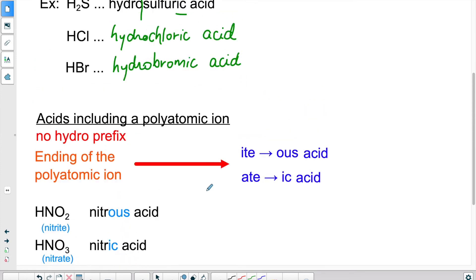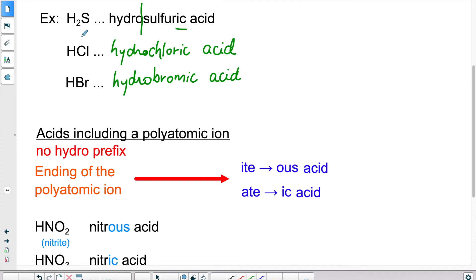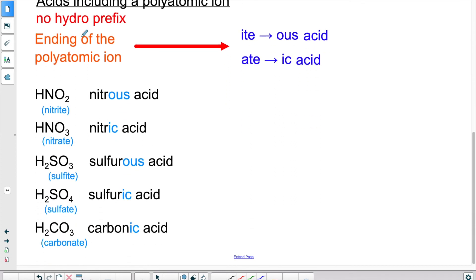If I make a comparison with H2S, H2S is called hydrosulfuric acid. We put hydro because of this here and because this is a binary or a simple acid.